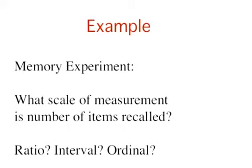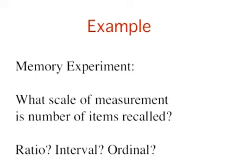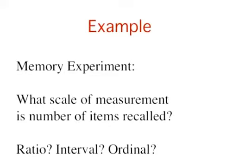In memory experiments, the dependent variable is often the number of items correctly recalled. What scale of measurement is this? You could reasonably argue that it is a ratio scale. First, there is a true zero point. Some subjects may get no items correct at all. Moreover, a difference of 1 represents a difference of 1 item recalled across the entire scale. It is certainly valid to say that someone who recalled 12 items recalled twice as many items as someone who recalled only 6 items.